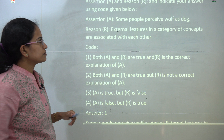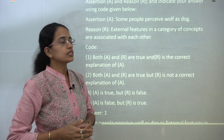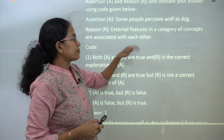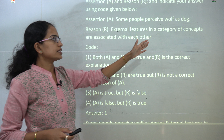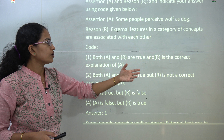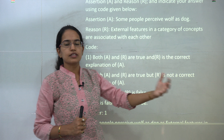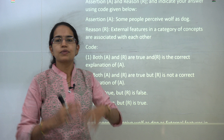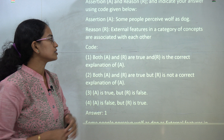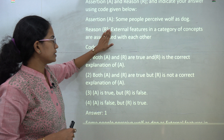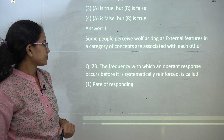The next question is again very direct. Some people perceive a wolf as a dog because external features in the category of concepts are associated with each other. Sometimes people confuse a wolf with a dog because of overlapping external features in the concept. Both statements are true and the reason explains the assertion.